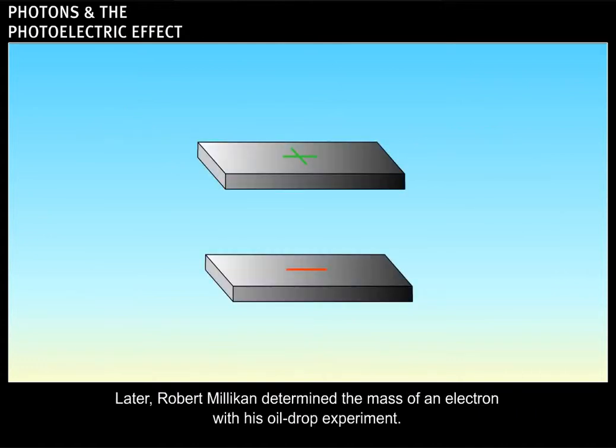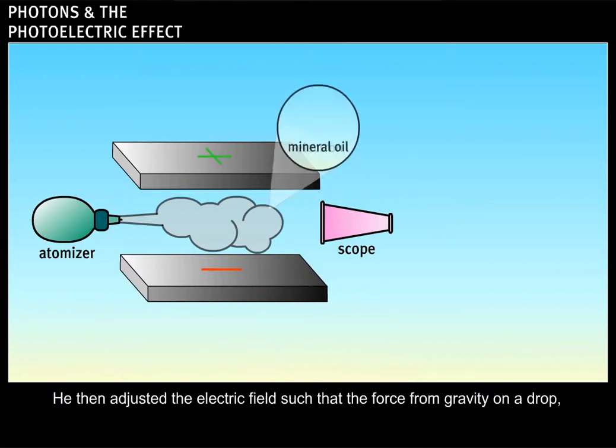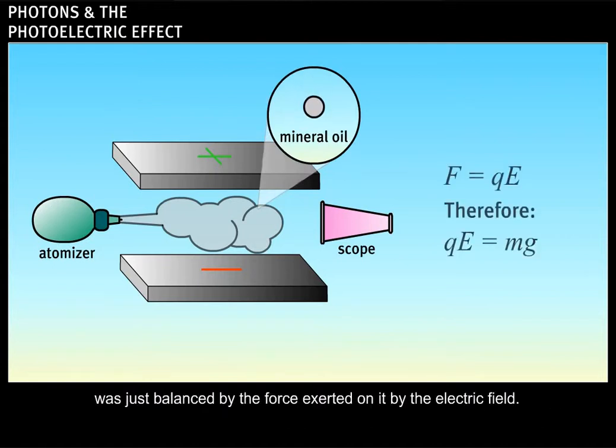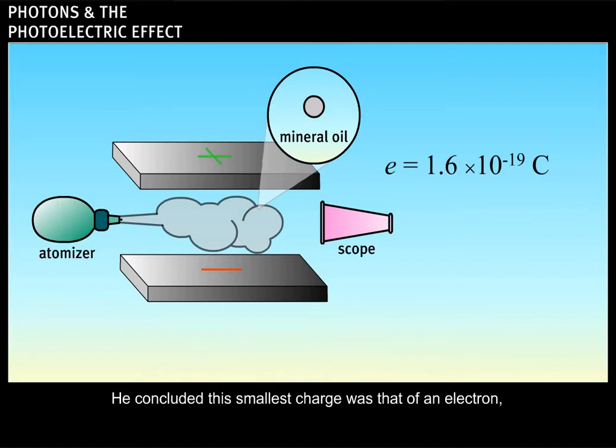Later, Robert Millikan determined the mass of an electron with his oil drop experiment. Millikan sprayed tiny drops of electrically charged mineral oil in an electric field. He then adjusted the electric field such that the force from gravity on a drop was just balanced by the force exerted on it by the electric field. From this information, he was able to determine the charge on the oil drop, which he discovered was always an integral multiple of some smallest charge. He concluded this smallest charge was that of an electron.